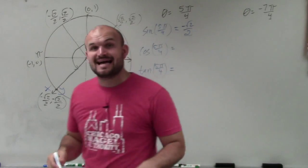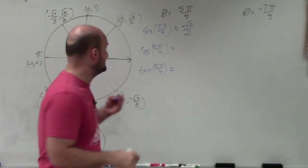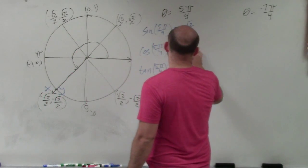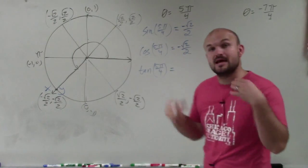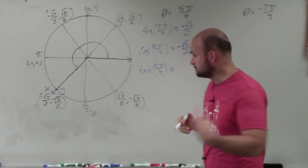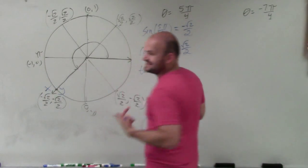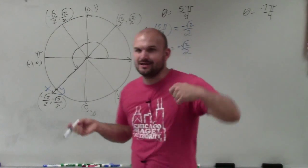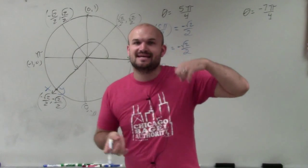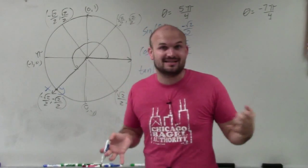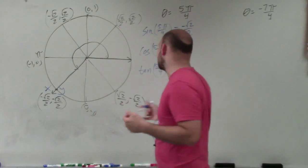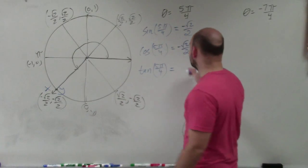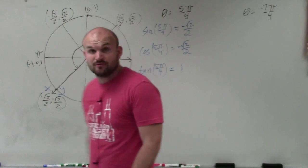Cosine represents the x-coordinate, which is also negative square root of 2 over 2. Tangent is y over x. Since y and x are exactly the same value, dividing one by itself gives 1. And a negative divided by a negative is positive, so tangent of 5 pi over 4 equals positive 1.